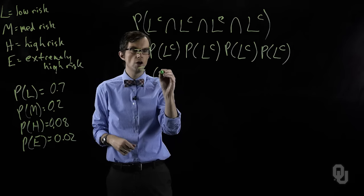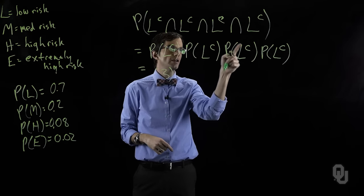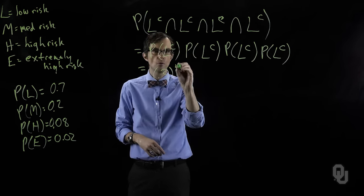So this is point three times point three times point three times point three. That is point three to the fourth.